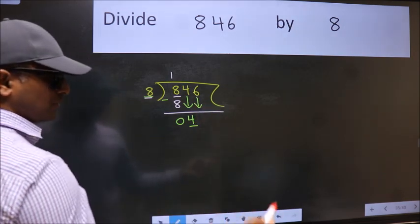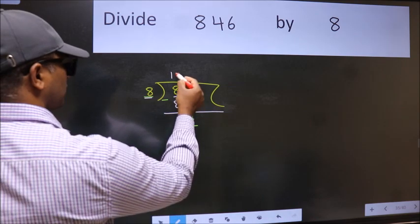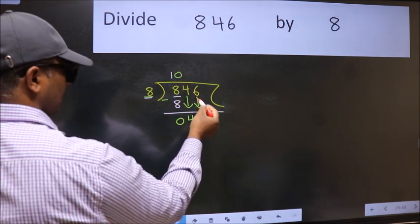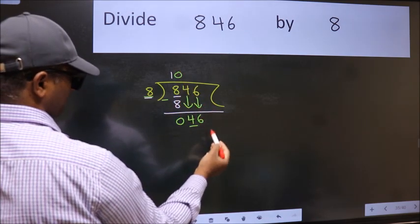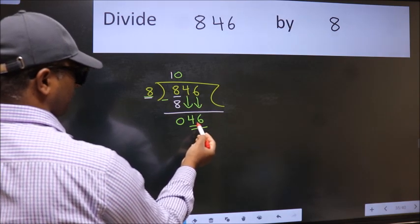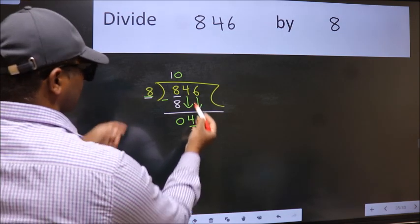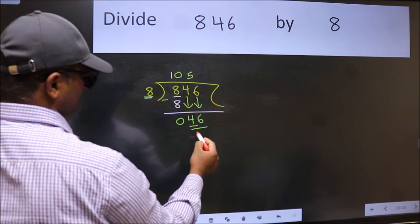And the rule to bring down the second number is put 0 here. Then only we can bring this number down. So 46. A number close to 46 in the 8 table is 8 fives 40.